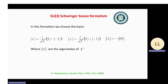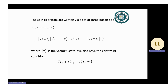We use the Schwinger boson formulas to represent the spin operator. In this formula, we choose the basis given by an equation, where these are the eigenstates of the S_z operator. The spin operators are written via a set of three boson operators T_alpha, where V is the vacuum state.